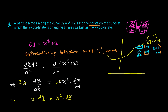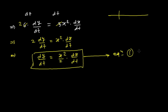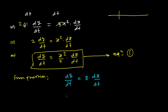One more thing is given in the problem: we need to find the points at which the Y coordinate is changing 8 times as fast as the X coordinate. So from the given condition — Equation 2 — dy/dt equals 8 times dx/dt.